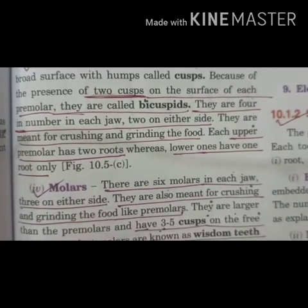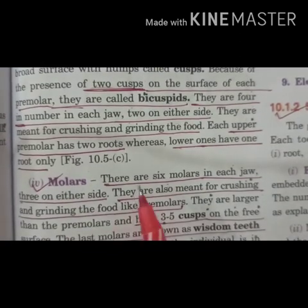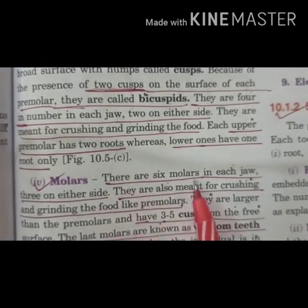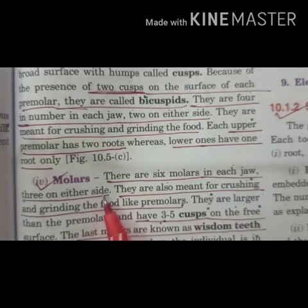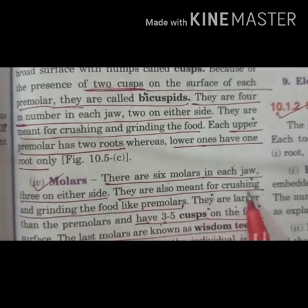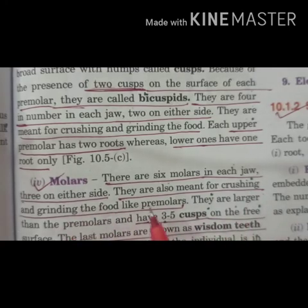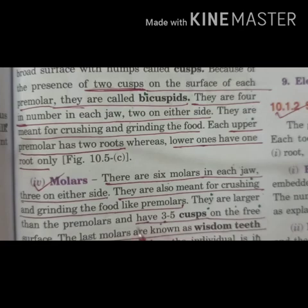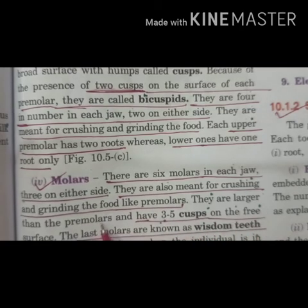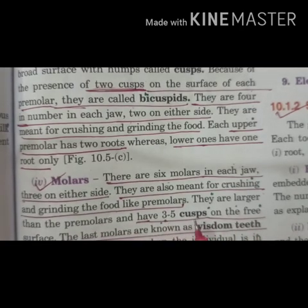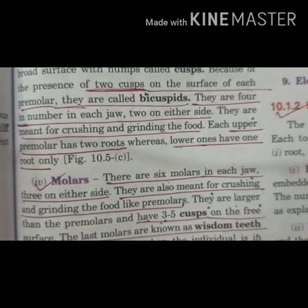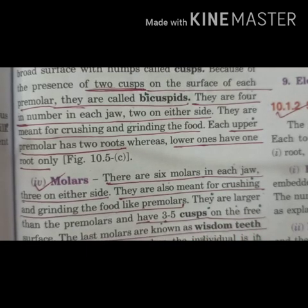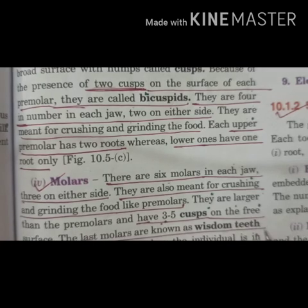Molars: there are six molars in each jaw, three on either side. They are also meant for crushing and grinding food like premolars, but they are larger than premolars and have three to five cusps on the free surface. The last molars are known as wisdom teeth.